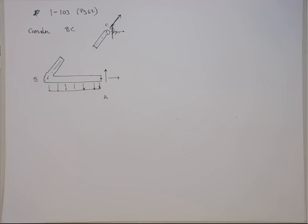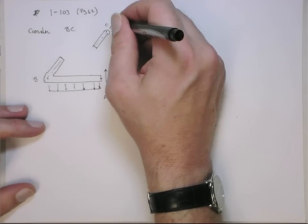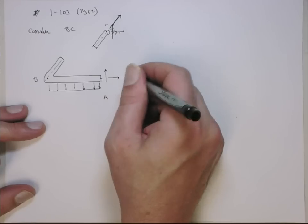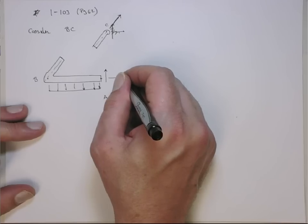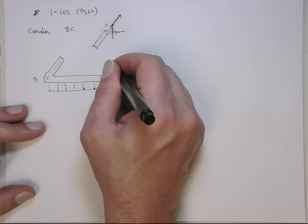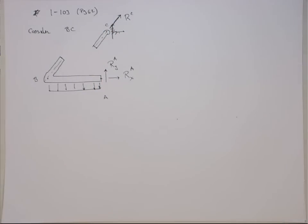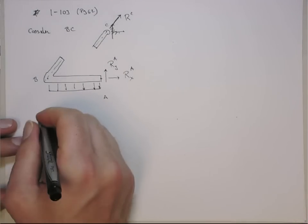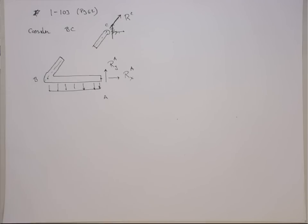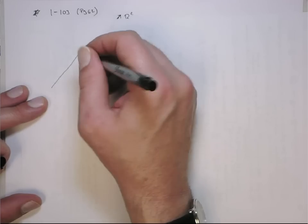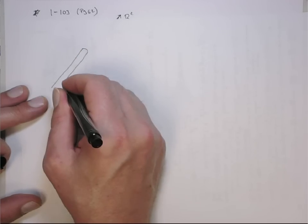Once you recognize it's a two-force member, you know the angle. So you have the magnitude as the unknown, and the X and Y components at A. I'll call these reaction X and reaction Y at point A, and this is just the reaction at C — we know the direction. To find those, we consider the free body diagram on the whole entity. Let's draw the free body diagram for the whole structure and see if we have enough information.